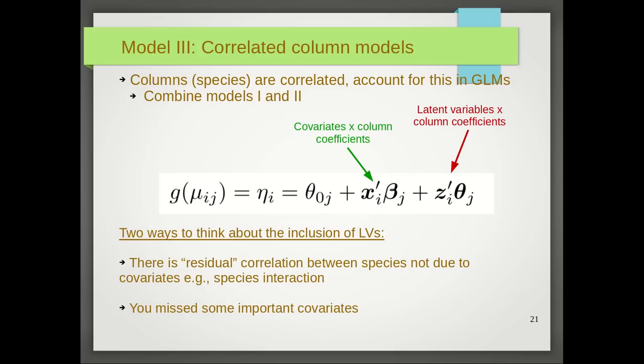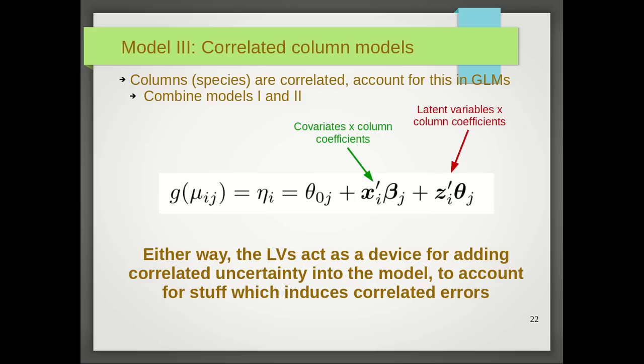The second way to think about it is that we have potentially missed out on some important covariates, and the latent variables zi then provide a good guess or a good prediction of what these missing covariates are, and the θj's will then be estimates of the coefficients that are related to these missing covariates. Either way, the latent variables act as a device for adding correlated uncertainty into the model to account for stuff which induces correlated errors, things like species interaction, missing covariates, which induce inter-species correlated errors or inter-species correlation. The latent variables are a method or a parsimonious approach of accounting for this correlated uncertainty.